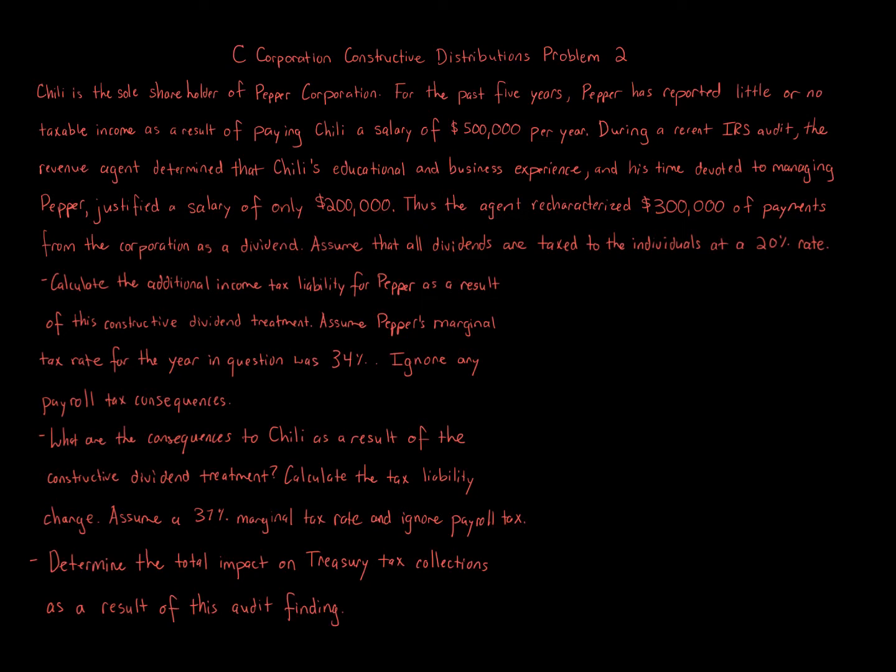What are the consequences to Chili as a result of the constructive dividend treatment? Calculate the tax liability change. Assume a 37% marginal tax rate and ignore payroll tax. Determine the total impact on treasury tax collections as a result of this audit finding.